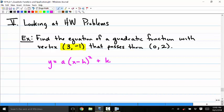You know the H and the K. So Y is equal to A times (X minus 3) squared minus 1.